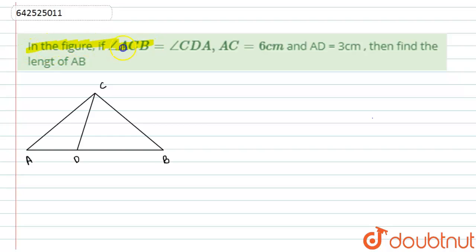Here we have given in the figure if angle ACB is equals to angle CDA, AC is equals 6 centimeters and AD is equals 3 centimeters, then find the length of AB. So let's start with this solution.